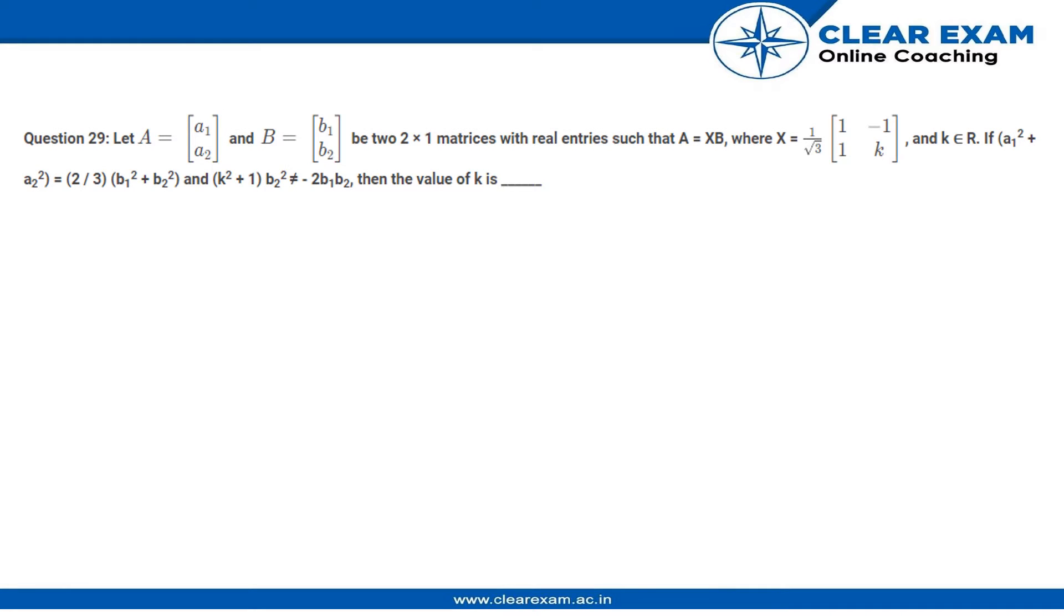Here is another simple question. If A is a 2×1 matrix [a1, a2] and B is [b1, b2], two 2×1 matrices with real entries such that A equals XB, where X is 1/√3 times the matrix [1, -1; 1, k] and k belongs to R.